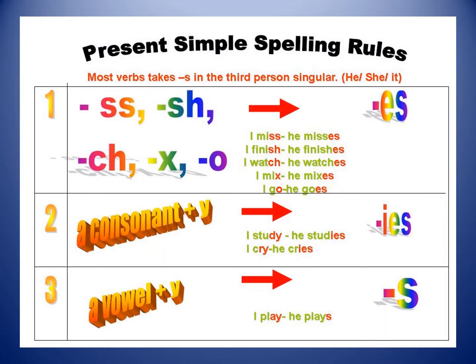I have two problems. The first one: if the verb ends with SS, SH, CH, X, or O, I will put -ES instead of just -S. For example: I miss — no S because I hate S. He misses — I cannot add S only, I have to put -ES because the verb ends with SS.